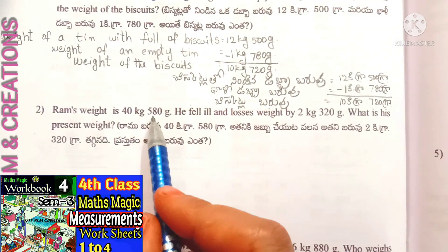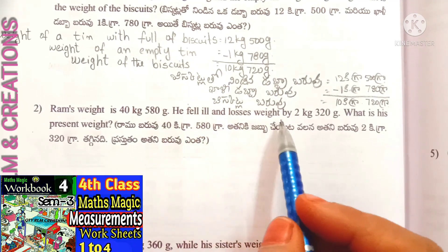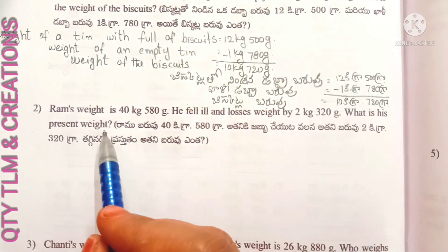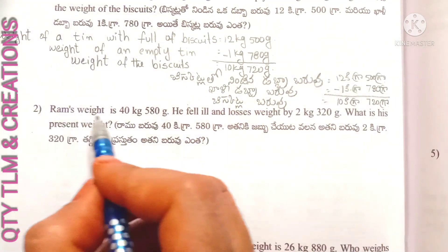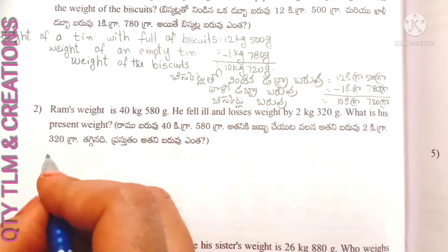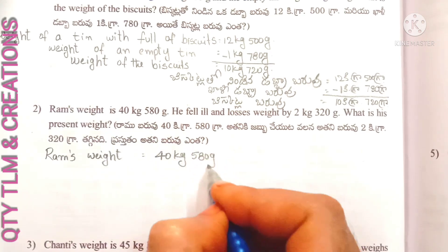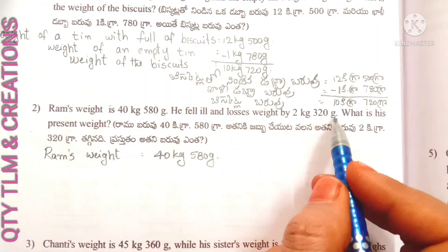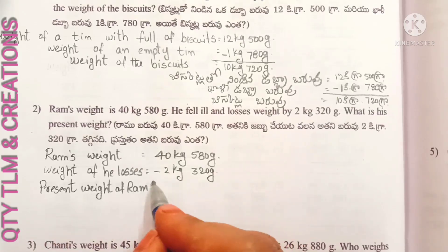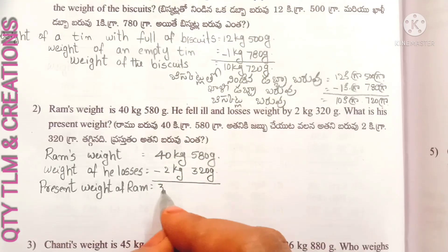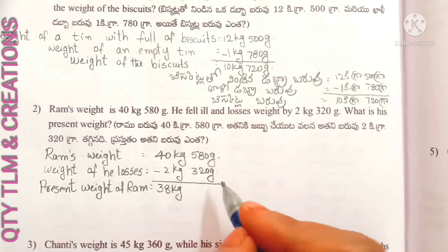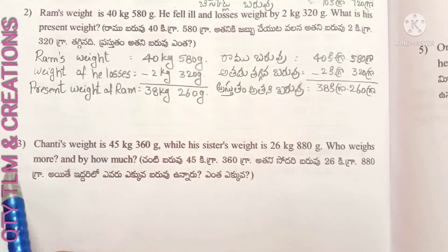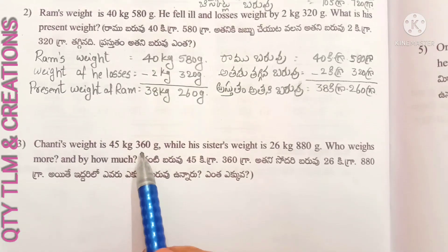Next question: Ram's weight is 40 kilograms 580 grams. He fell ill and lost weight by 2 kilograms 320 grams. What is his present weight? Ram's weight is 40 kilograms 580 grams, weight he lost equals 2 kilograms 320 grams, so present weight of Ram equals 38 kilograms 260 grams.